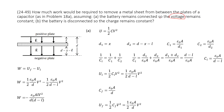They ask how much work is needed — this equals the change of energy, because of work-energy conservation. So the change of work equals the change of energy, and we use the final energy minus initial energy to get the work. This is our strategy: use final energy minus initial energy.